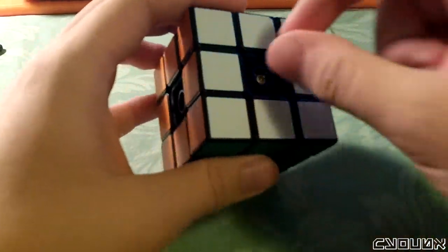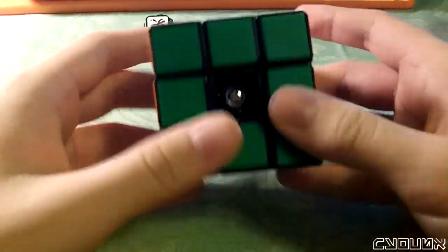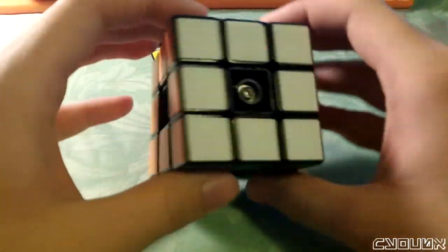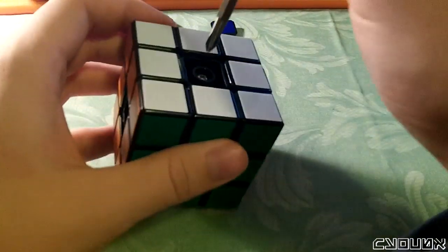It's very easy to do. So the first step is obviously to take off the center caps, put them in a pile like so, and this cube currently is tensioned perfectly, but what I'm going to do is I'm going to prove to you that the tensions aren't even by randomly loosening and tightening this.